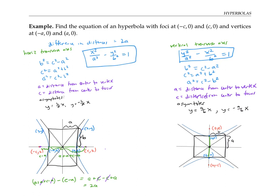I want to point out that in this notation, a always goes with the positive term — the term that's added rather than subtracted — while b goes with the negative term. Which term is positive, the x² or the y², determines the orientation of the hyperbola.